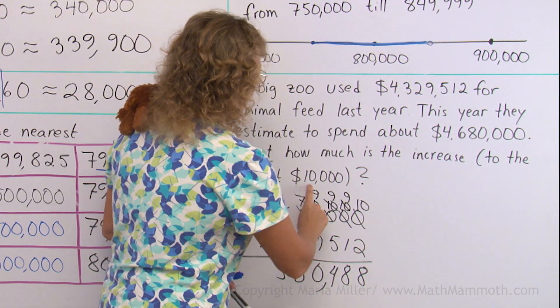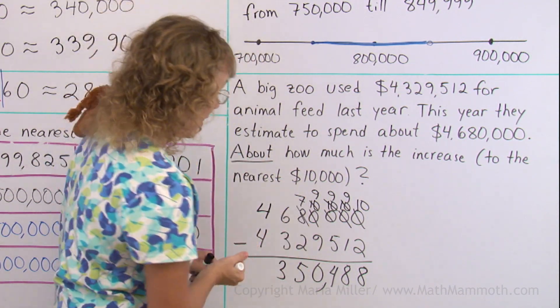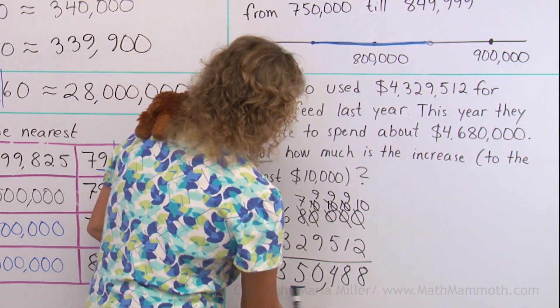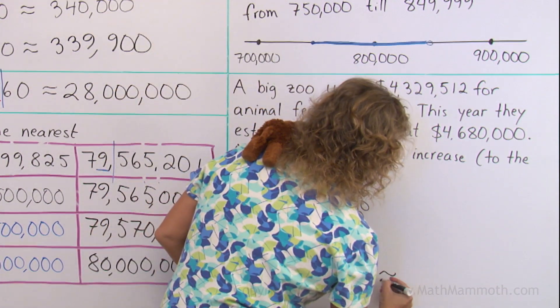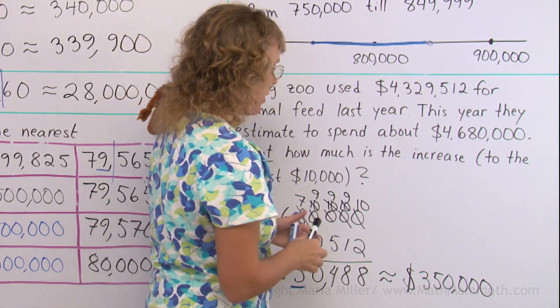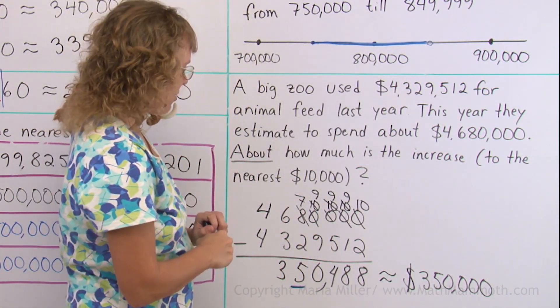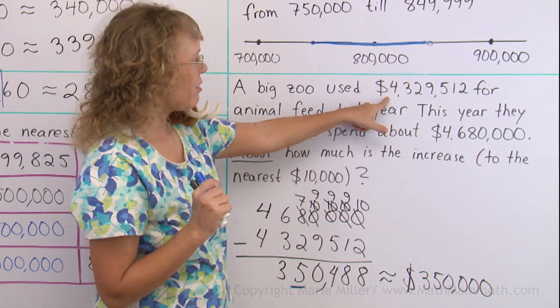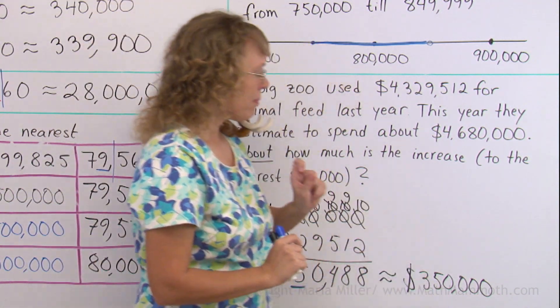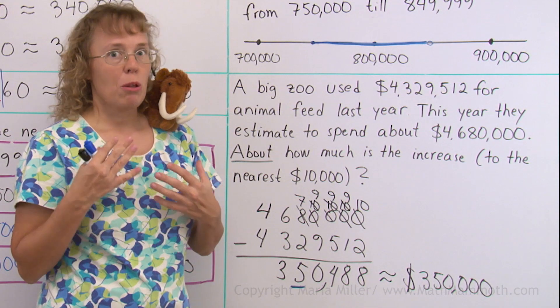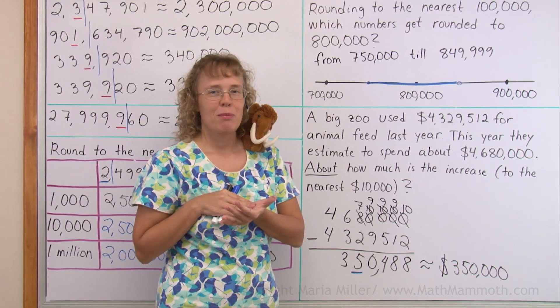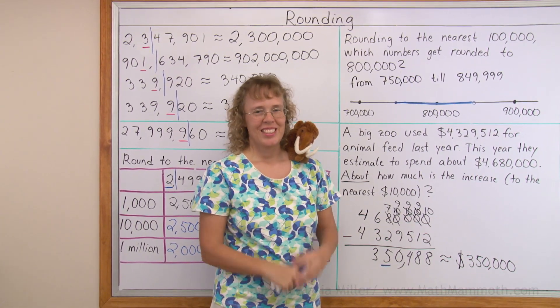But it said to the nearest $10,000. So we need to round it to the nearest $10,000. It's the $10,000 digit and there's 0 there. So it just becomes $350,000. So that's about how much the increase is. Now you might wonder what if I had rounded this number here first and then subtracted. It turns out that in this case you would get the same answer. But in general it is always best to round only your final answer not your intermediate numbers. Because it might in some problems make a difference. Well done with this lesson.